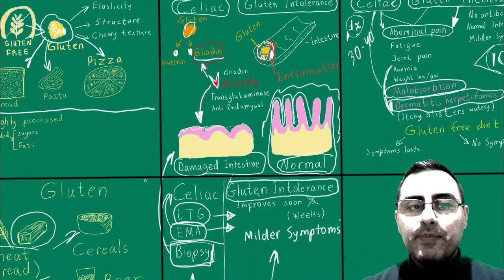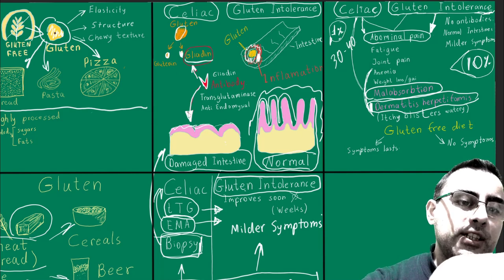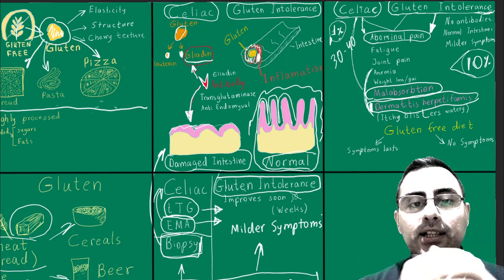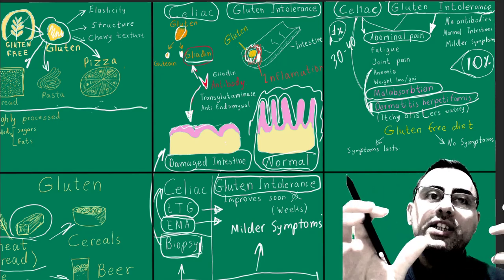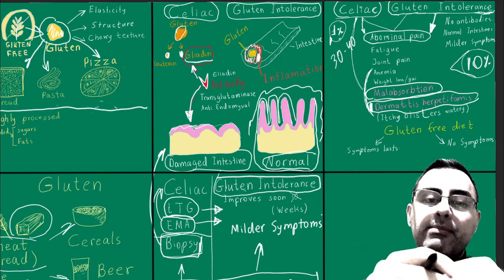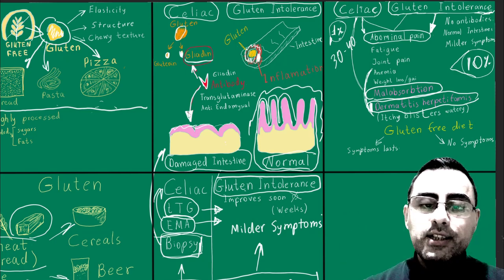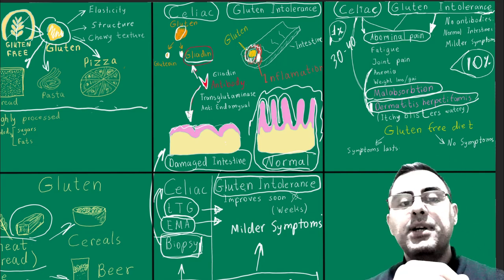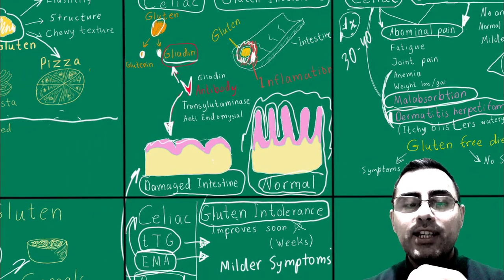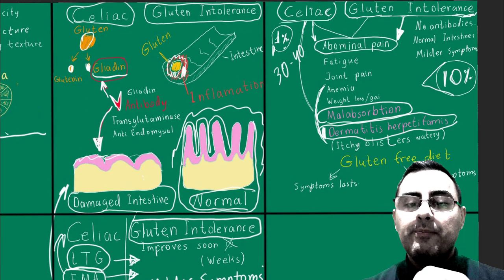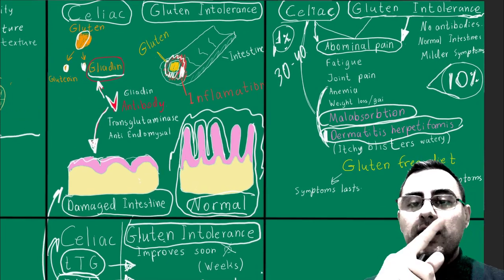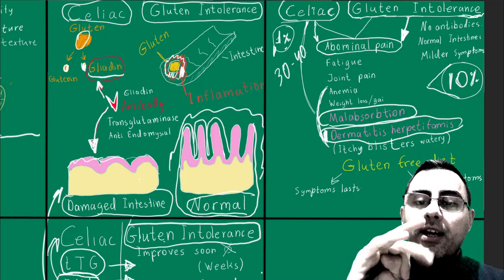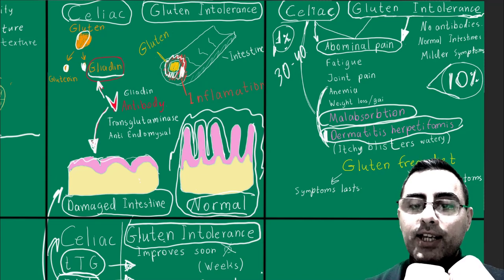Let's summarize. Gluten is a small protein found in bread, pasta, pizza, and other baked products. Celiac disease and gluten intolerance both involve the body producing antibodies against gluten, and these antibodies can damage the intestines, joints, and skin. Symptoms include abdominal discomfort, stomach ache, bloating, diarrhea, constipation, fatigue, joint pain, anemia, weight loss, malabsorption, and dermatitis. Symptoms are more severe in celiac disease.